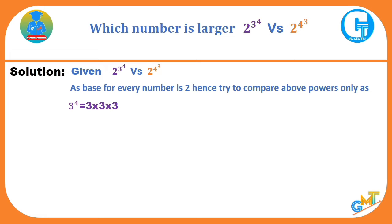That is 3 raise to 4, that is 3 into 3 into 3 into 3, and 4 raise to 3, that is 4 into 4 into 4. That is 81 and 64.